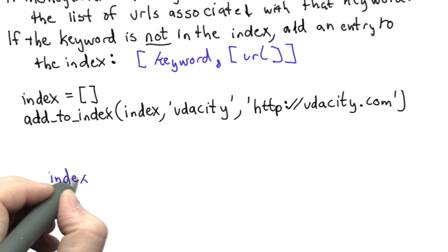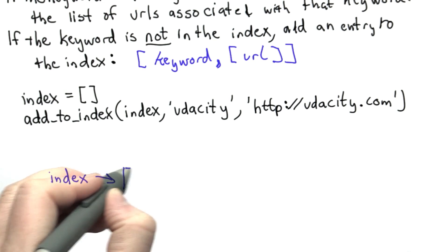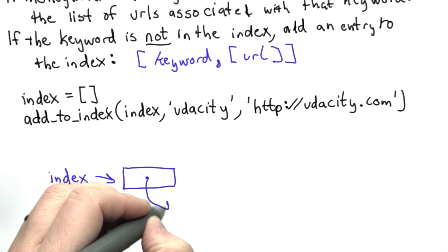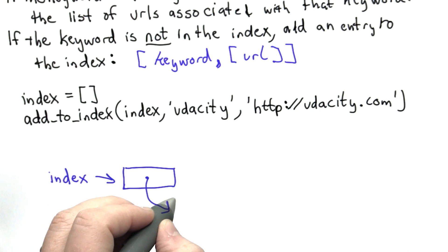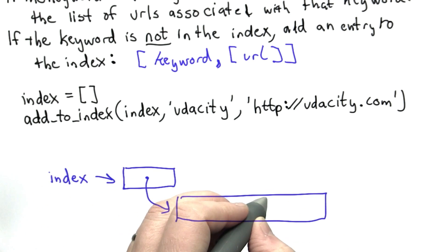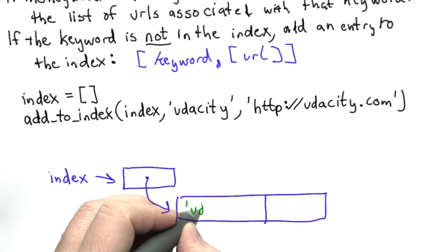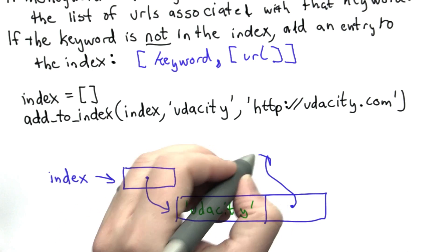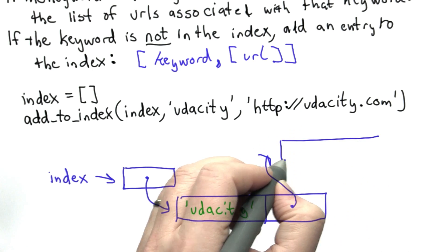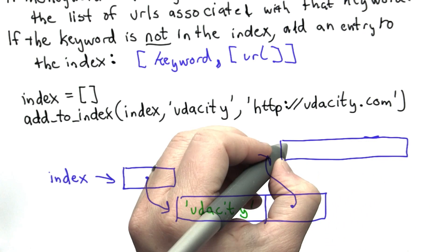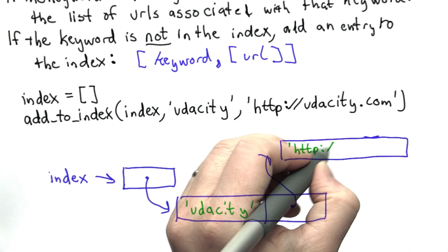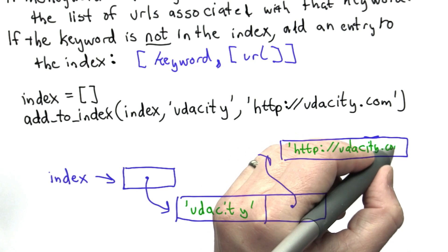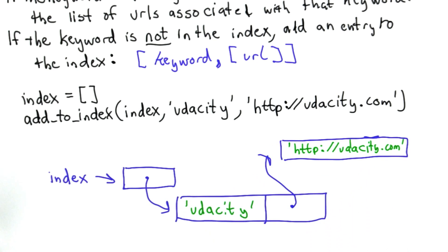After we call addToIndex, we're going to add an element to the index list — so we've mutated index. Now it contains a single element: a list containing the string 'udacity' as the keyword. The second element of that list is itself a list containing one element, which is the string 'http://udacity.com'. So that's the new value of index.